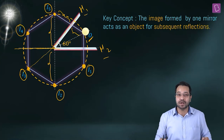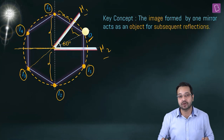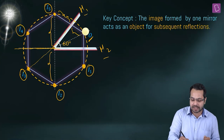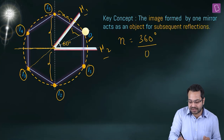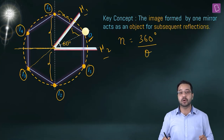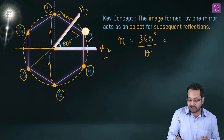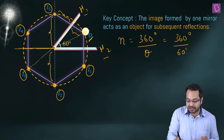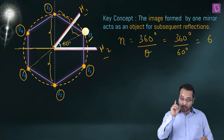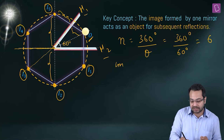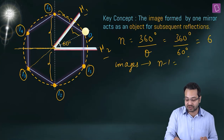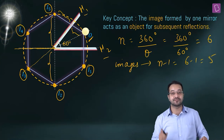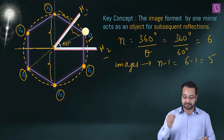There is another way using a simple formula. Calculate N = 360° / θ, where θ is the angle between the mirrors. So N = 360 / 60 = 6. When N is even, the number of images formed is N − 1 = 6 − 1 = 5. That is the answer.